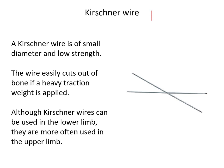The Kirschner wire (K-wire) differs from the Steinmann pin in that it is sharp at both ends, whereas the Steinmann pin is sharp at one end and blunt at the other. K-wires are of smaller diameter and lower strength — they can easily cut out of bone if heavy traction is applied. K-wires are not generally used for skeletal traction but for fracture reduction; when used in the lower limb they are most often used in the upper limbs or in pediatric patients.